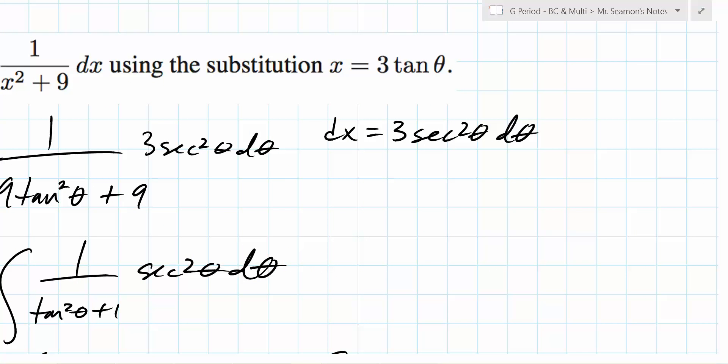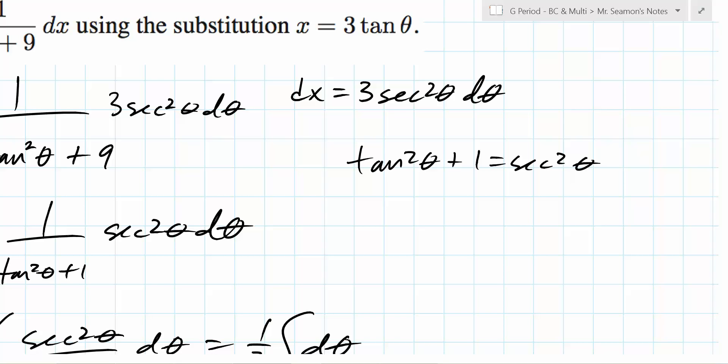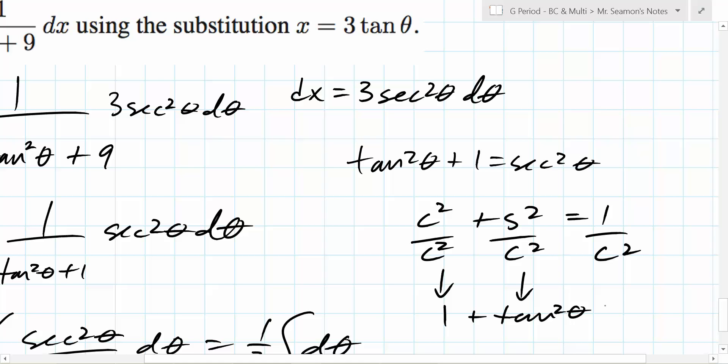So again, there's a few things you need to remember. Your basic trig derivatives. Basic trig derivatives. And we also need to remember things like this. Where does this come from, by the way? Same place we just started. Cosine squared plus sine squared equals 1, right? Divide everything by cosine squared. What happens when you do this? That turns into 1. This turns into tangent. And this turns into secant. That's where it comes from, everybody. You need to remember those things.